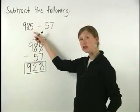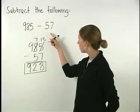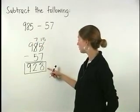So the difference between 985 and 57 is 928.